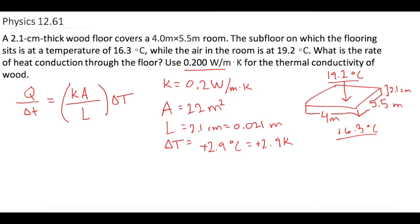So now we can just plug it in. So Q over delta T is equal to 0.2 watts per meter Kelvin times the area, which we said is 22 meters squared, and then that is divided by L, which is 0.021, and then we get a value for that, and we times it by 2.9 Kelvin, which gives us Q over delta T as 610 watts.